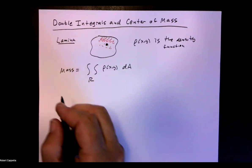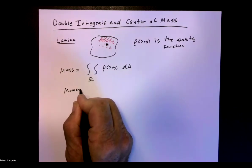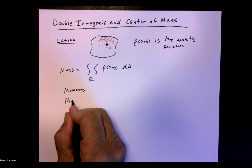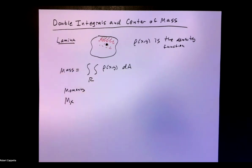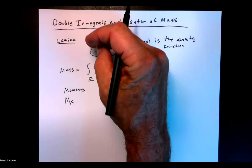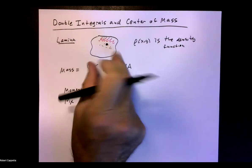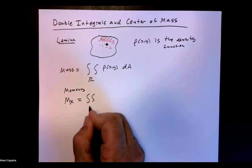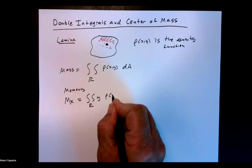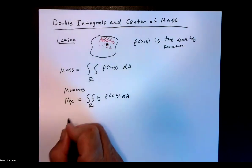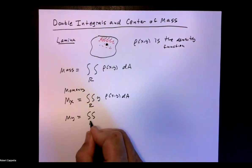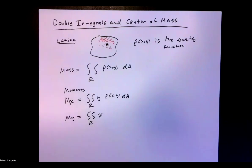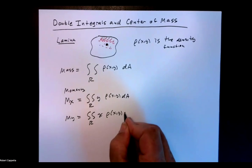To answer that question, we have to talk about some moments. The moment with respect to the x-axis, M sub x, represents the likelihood to rotate on a line parallel to the x-axis. That is the double integral over R of y times rho of x, y, dA. Similarly, M sub y is the double integral over R of x times rho of x, y, dA — that's the tendency to rotate in a line parallel to the y-axis.